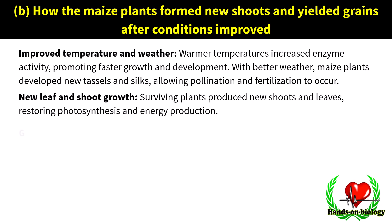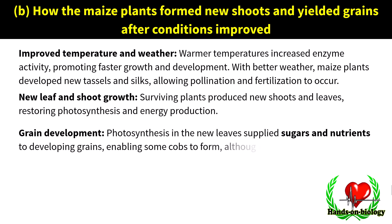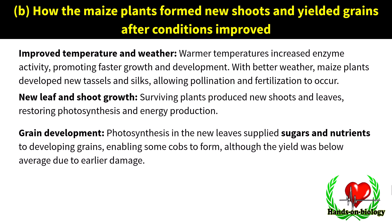Grain development: photosynthesis in the new leaves supplied sugars and nutrients to developing grains, enabling some cobs to form, although the yield was below average due to earlier damage.